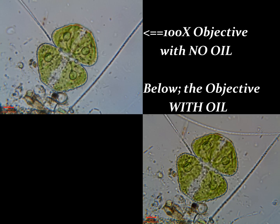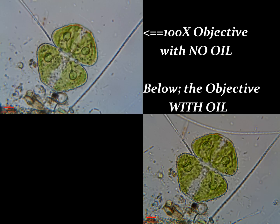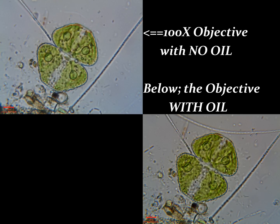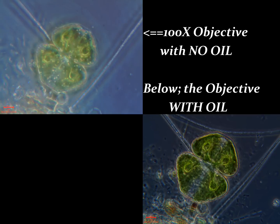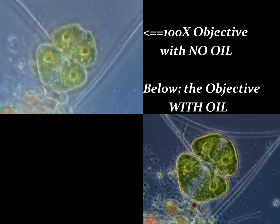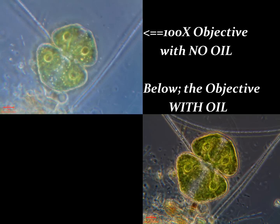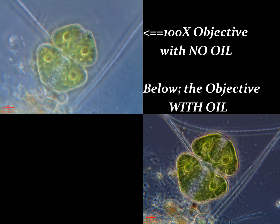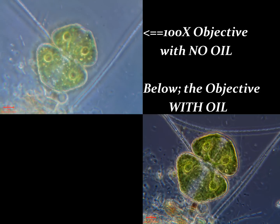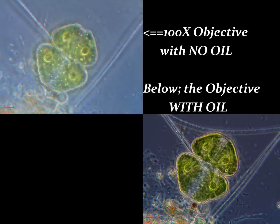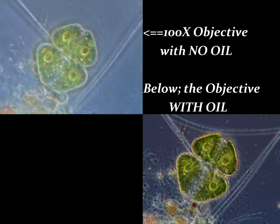But also check what happens when we switch to phase contrast — the difference is really dramatic. Without oil, there's very poor definition, just kind of a mess. With immersion oil, we have a nice sharp, clear image. So it really does make a difference. If you're going to use that 100 power lens, get your oil out, put a drop on, and go for it.